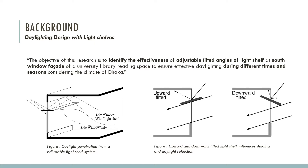Common light shelves cannot actively deal with external environmental factors. A slight tilt of light shelves can increase the light flux entering the room, especially during summer months. The objective of this research is to identify the effectiveness of adjustable tilted angles of a light shelf at the south window façade of a university library reading space to ensure effective daylighting during different times and seasons, considering the climate of Dhaka.